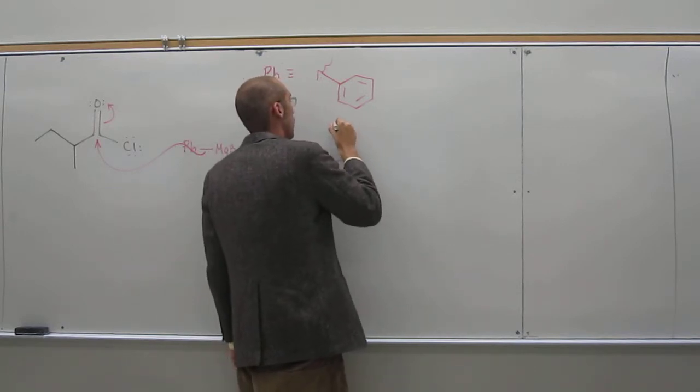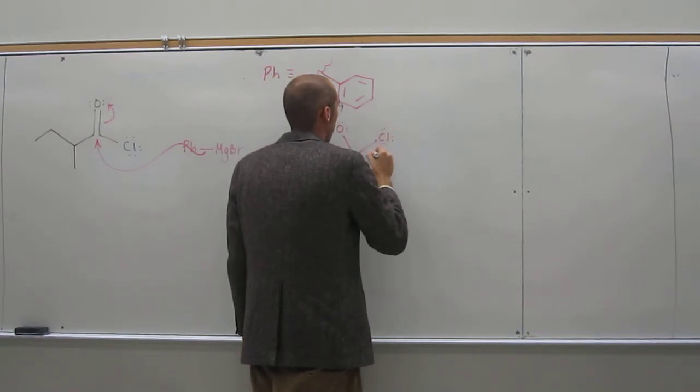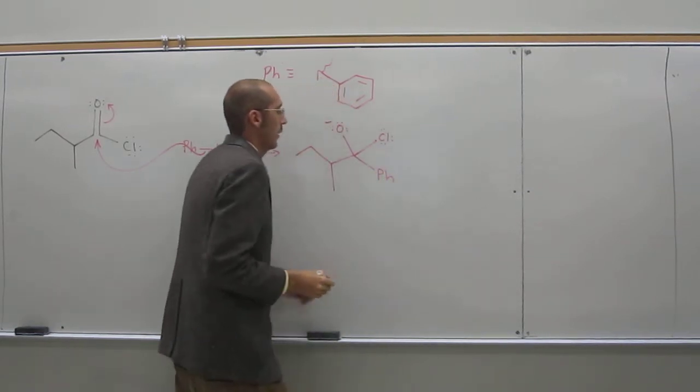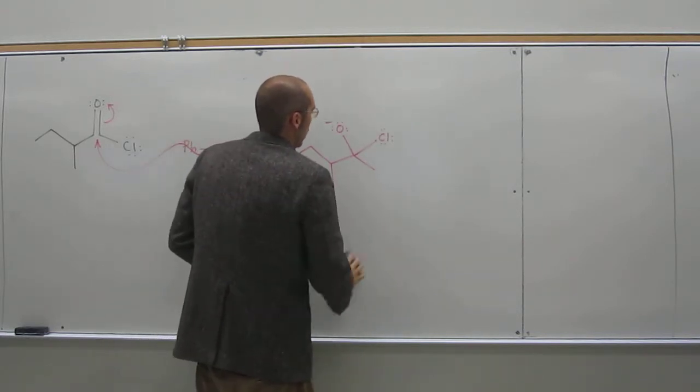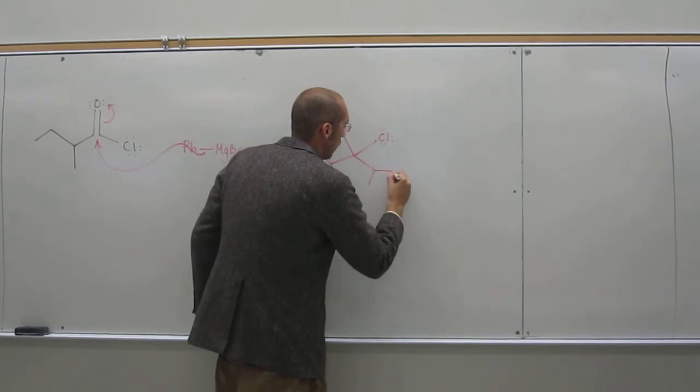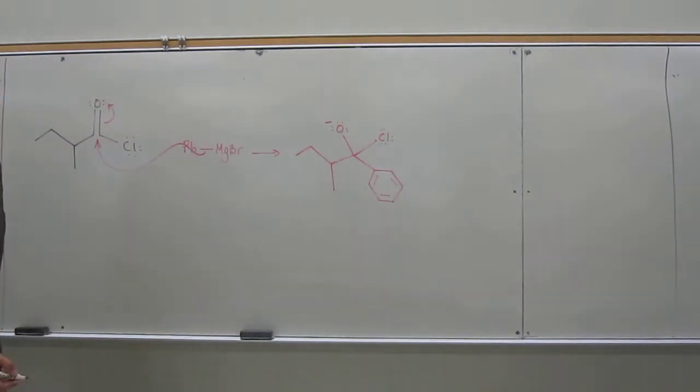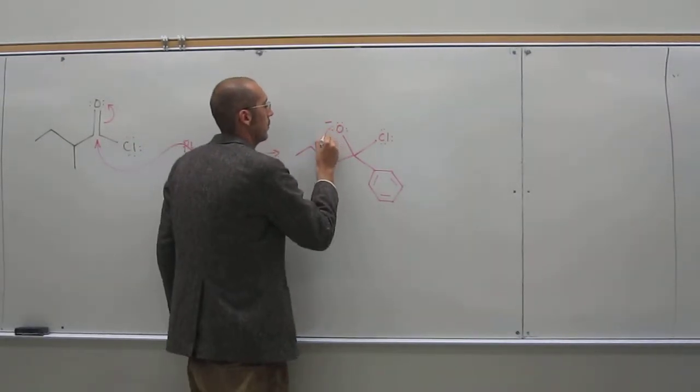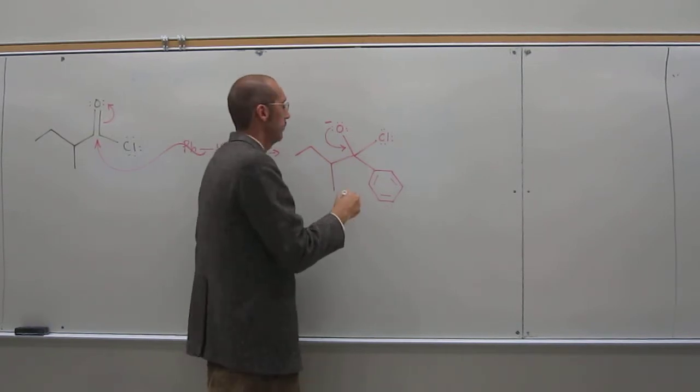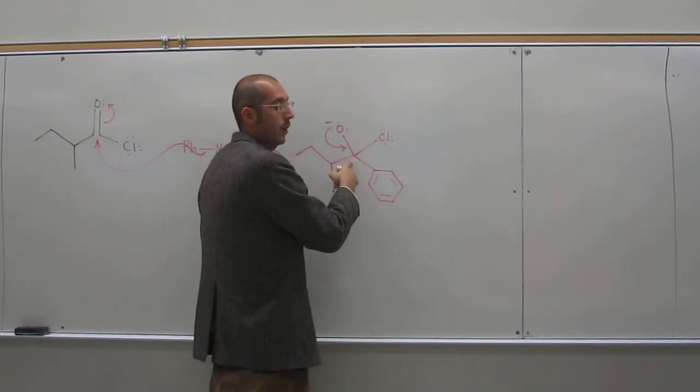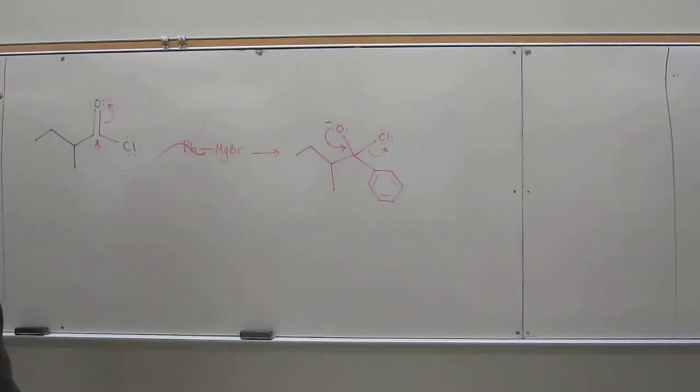Once that happens, we go from the sp2 to the sp3 intermediate. What's going to happen next is the collapse of the oxygen electrons to make that sp2 again. But when that happens, carbon can't be bonded to five things at once, so we're going to kick out the chloride.